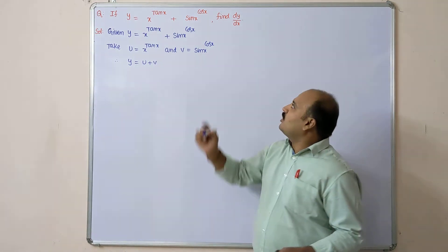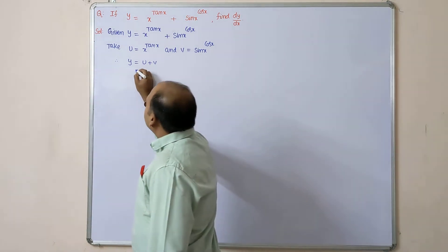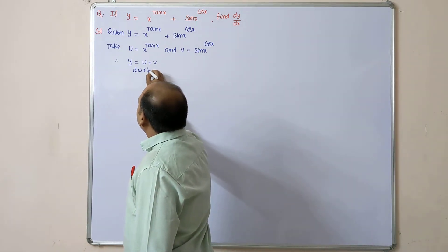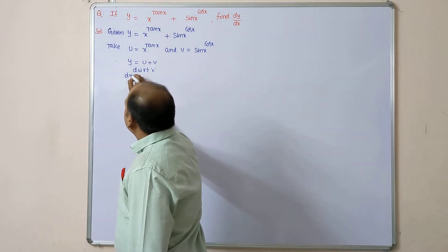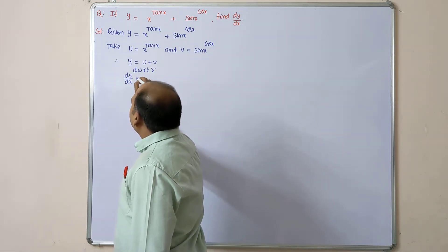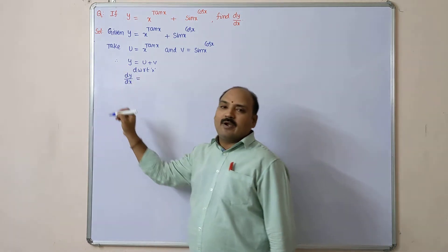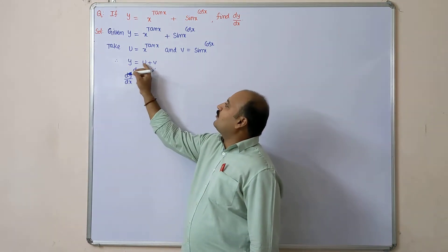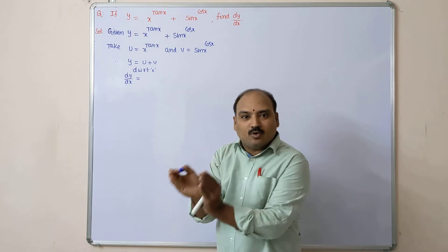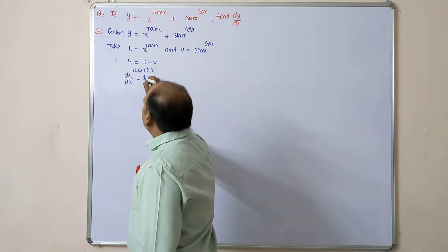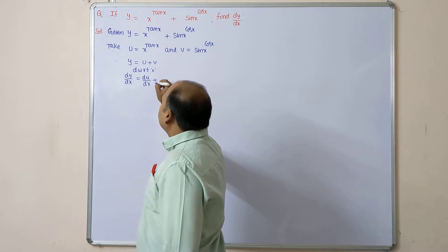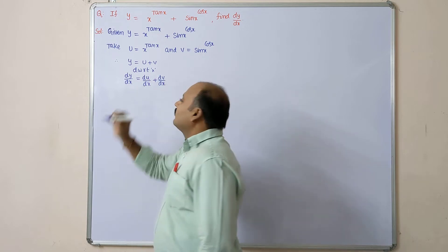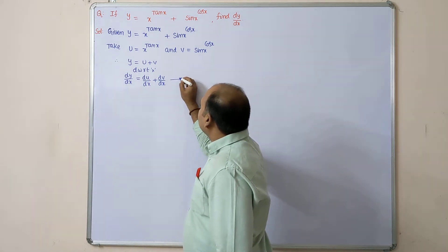They are asking to find dy/dx, so differentiate with respect to x. dy/dx = d/dx of (u + v) = d/dx of u + d/dx of v, which means du/dx + dv/dx. Put that as equation number one.